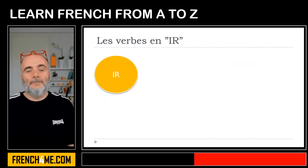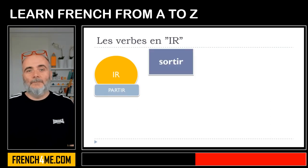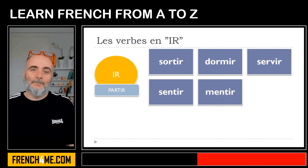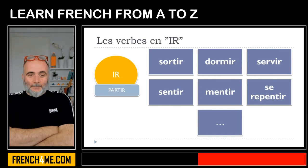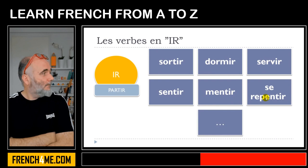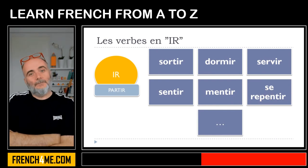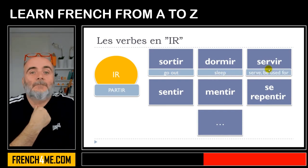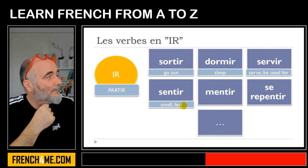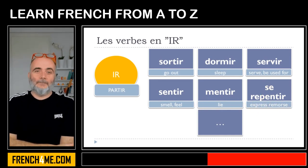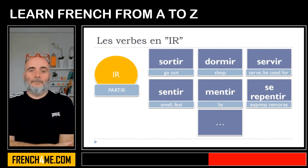Let's see now the verbs that will be conjugated like partir: sortir, dormir, servir, sentir, mentir, se repentir, and a few others. Sortir means to go out. Dormir, to sleep. Servir, to serve or be used for. Sentir, to smell or feel. Mentir, to lie. Se repentir, to express remorse. Keep in mind that these verbs will actually be conjugated like partir.